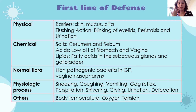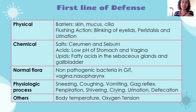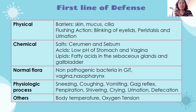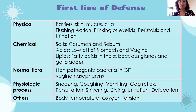In your nasopharynx there are normal flora that also protect us. Physiological processes include vomiting, gagging, perspiration, and shivering — shivering means your muscles move rapidly, creating heat. Crying, urination, and defecation are also ways of removing microorganisms. These are our first line of defense. They are very nonspecific — gram-positive bacteria, gram-negative bacteria, viruses, fungi, parasites — they attack all.